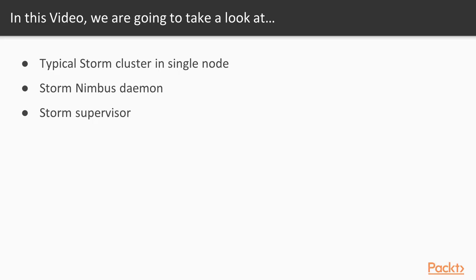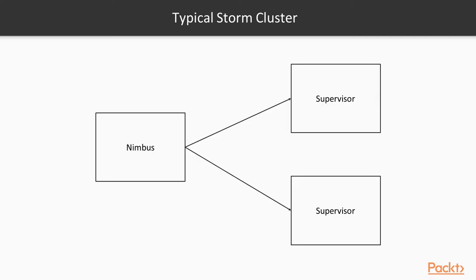In this video, we'll go ahead and understand how a typical Storm cluster looks like, and we'll talk about Storm Nimbus daemon and Storm Supervisor daemon. Please note we'll be just talking in brief — I'll not be going into complete detail about all these services for now. This is how a typical Storm cluster looks like. This is a pictorial depiction of a three-node cluster where in the first node I am running Nimbus and in the remaining two nodes I am running Supervisor.